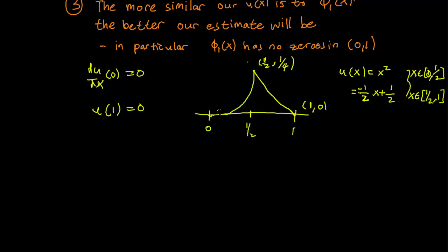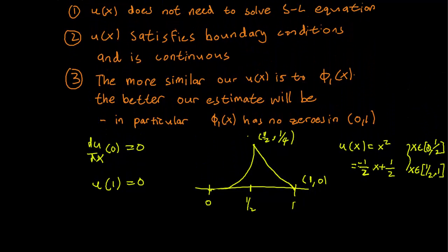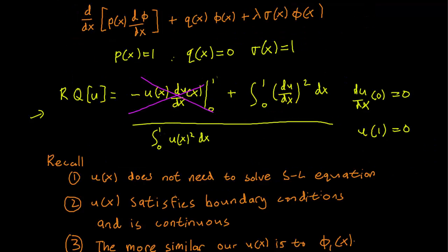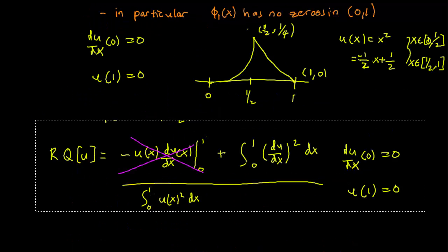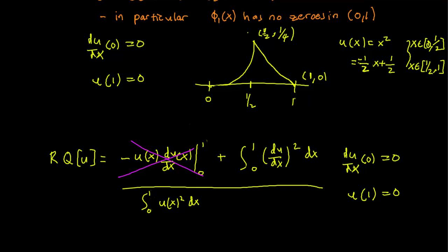I want to remind you that we never verify that this function solved the Sturm-Liouville equation, but that's not necessary for our estimate. All that's left is to plug in u in this Rayleigh quotient formula and we're done. We have an estimate for the smallest eigenvalue. We have to worry about two integrals: the one on the numerator and the one on the denominator.